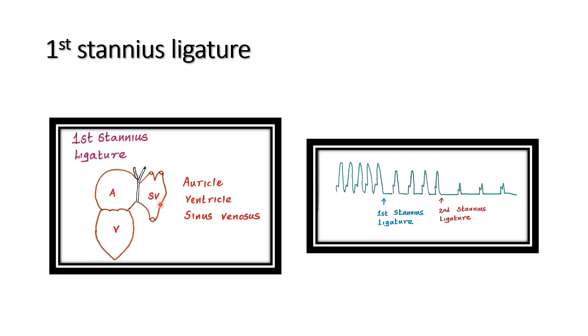In the frog experiment, first they separate the sinus venosus from the atrium by first Stannius ligature. Before the first Stannius ligature, they record the normal cardiogram, normal systole and diastole. After making the first Stannius ligature, they record the cardiogram. The amplitude and the duration in between also increases after the first Stannius ligature because the impulses are generated from the atrium, not generated from the sinus venosus in the frog.